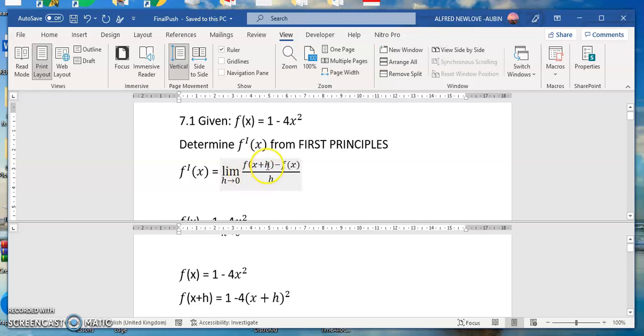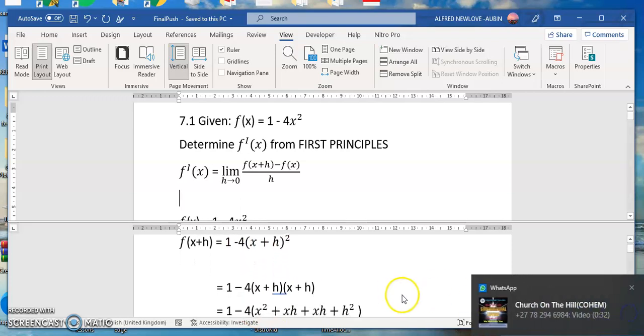So f(x+h) is going to be 1 minus 4, this time our domain is x plus h, then you bring the squared.